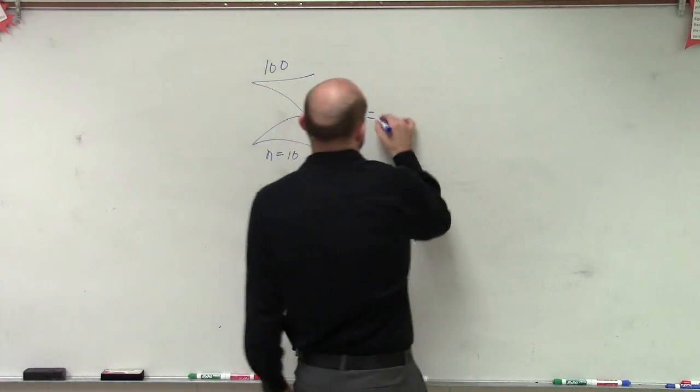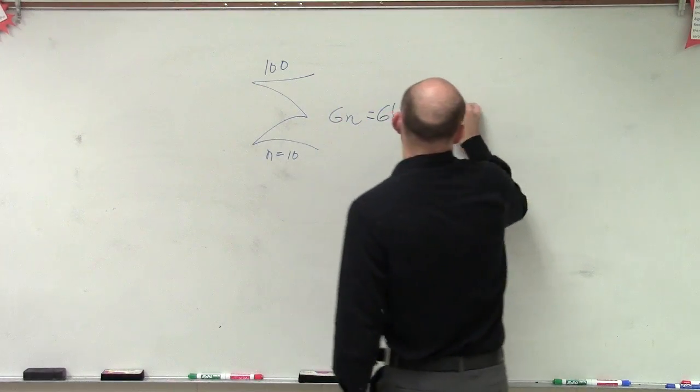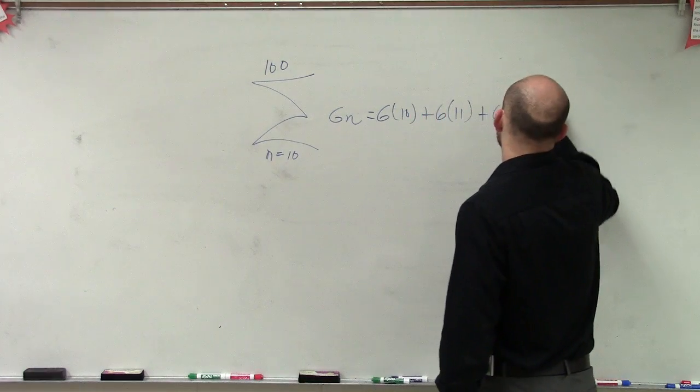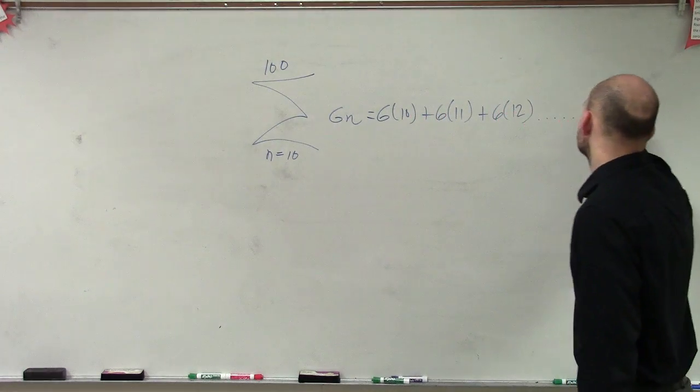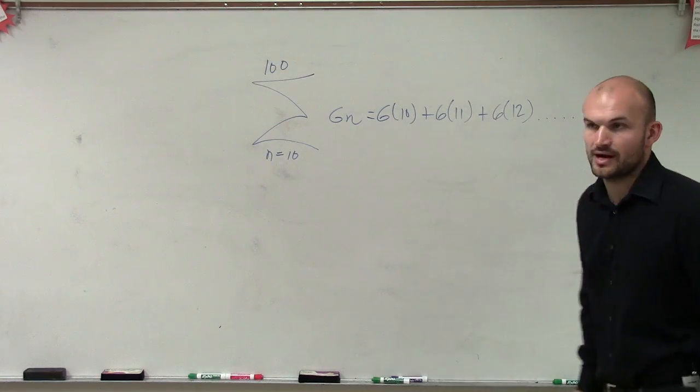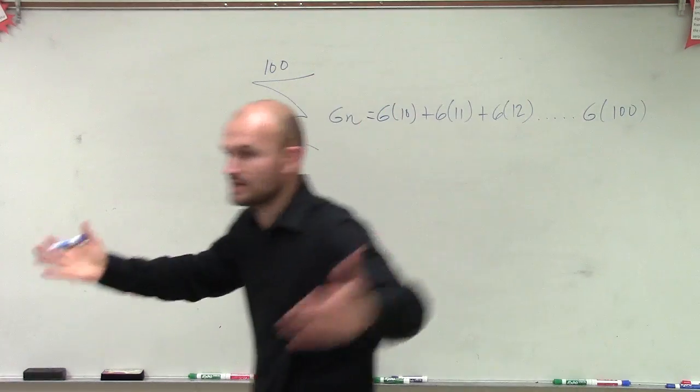So we know what we're doing is 6 times 10 plus 6 times 11 plus 6 times 12 dot, dot, dot times 6 times 100, right? We're going to go all the way up. So we're going to start at 10 and go all the way to 100.